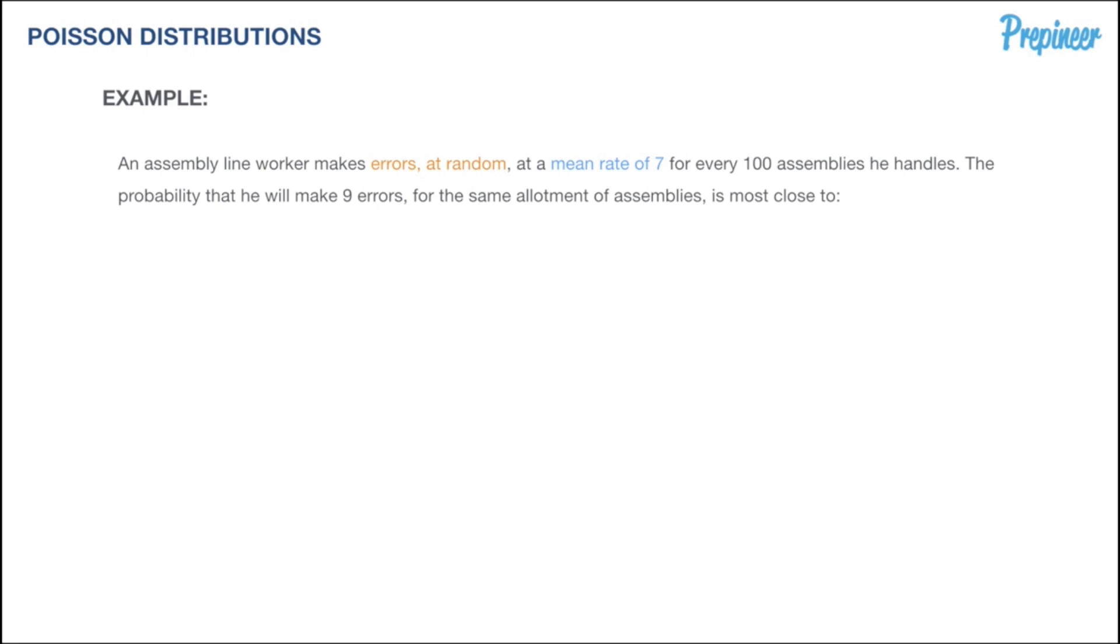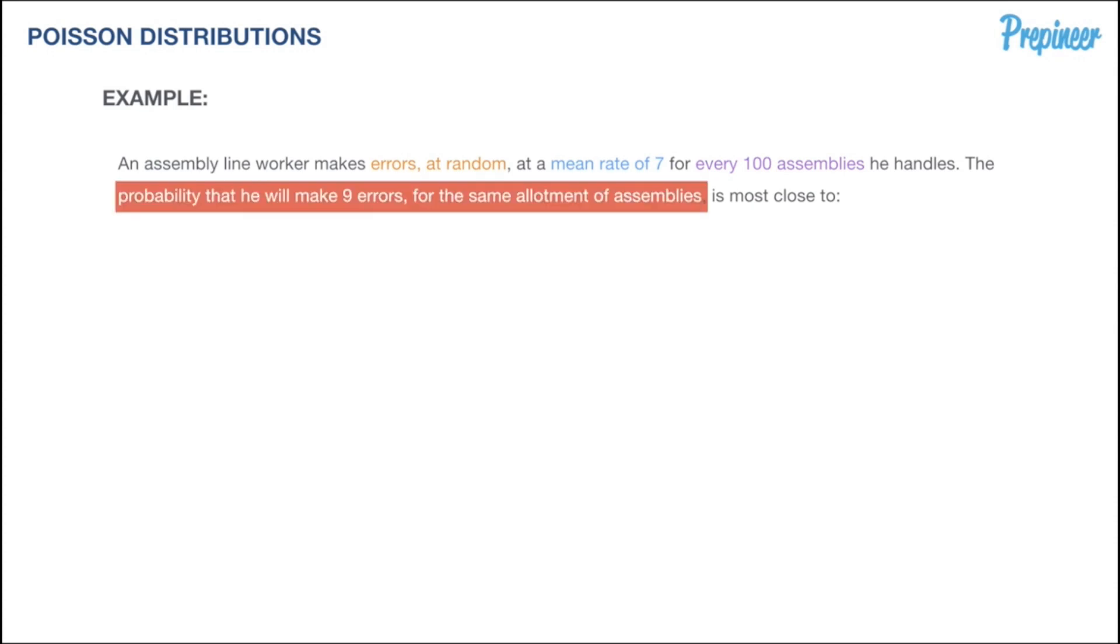The mean rate remains the same at 7, and the interval is 100 assemblies. Again, we're looking for the probability that he will make 9 errors for the same allotment of assemblies.